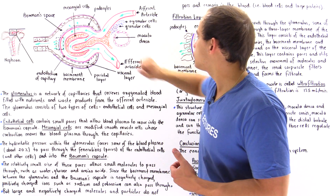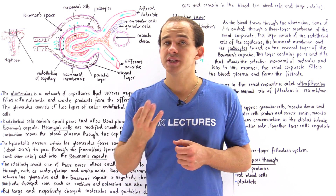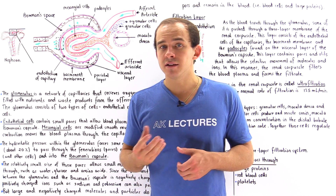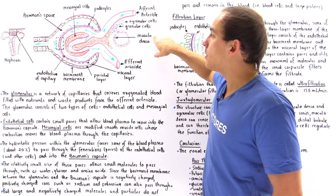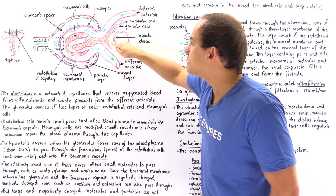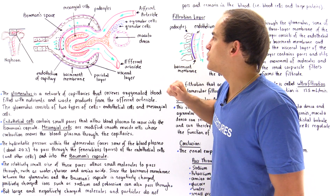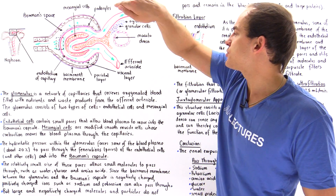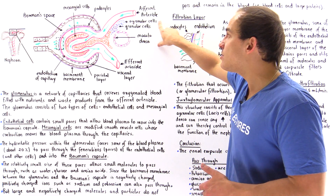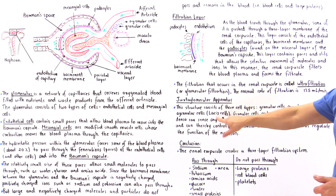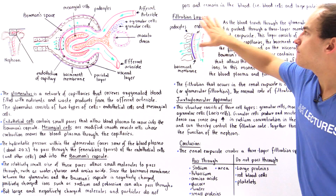We also have a section known as the juxtaglomerular apparatus, which is a collection of three types of cells involved in controlling and regulating filtration and blood plasma movement through our renal corpuscle. We have the macula densa cells found on the distal convoluted tubule, the granular cells also known as juxtaglomerular cells, and the agranular cells also known as lacis cells.